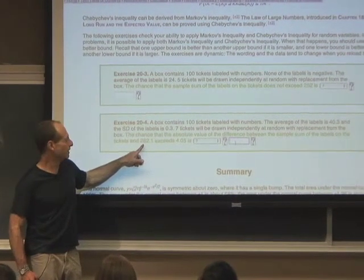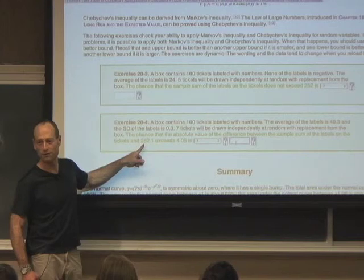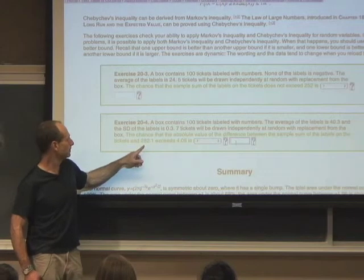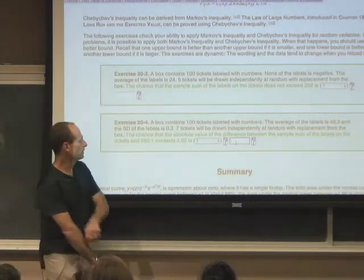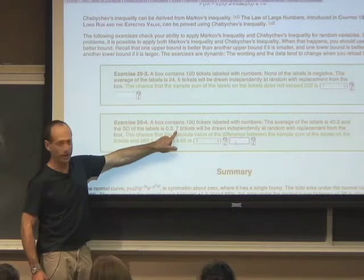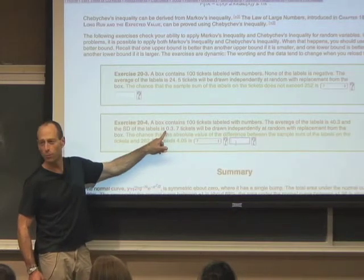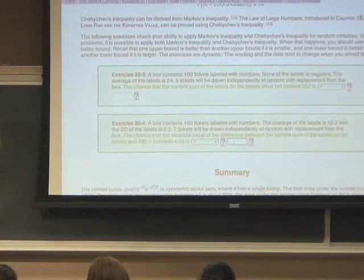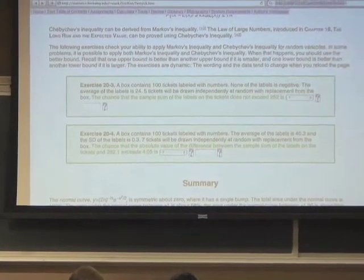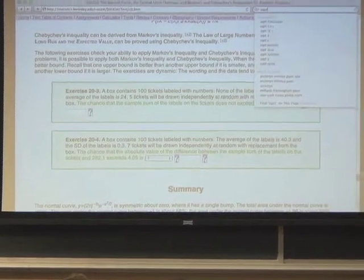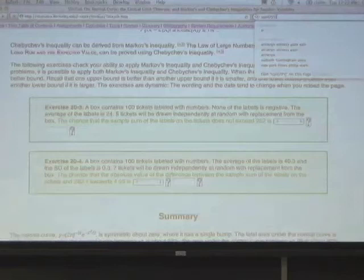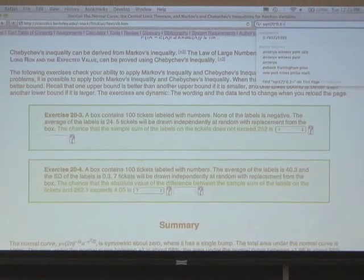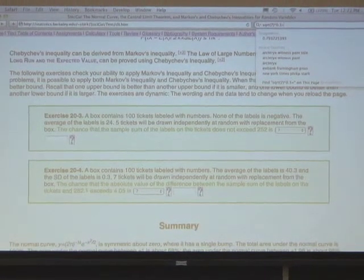What's the standard error of the sample sum of 7 draws from this box? It's going to be the square root of n, square root of 7, times 0.3, the SD of the box. So what is that? 0.7937.